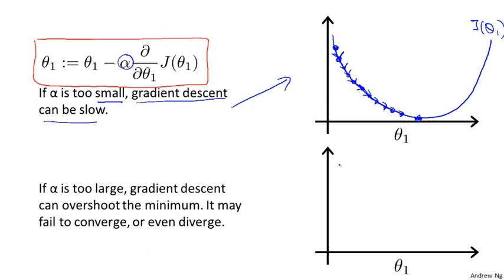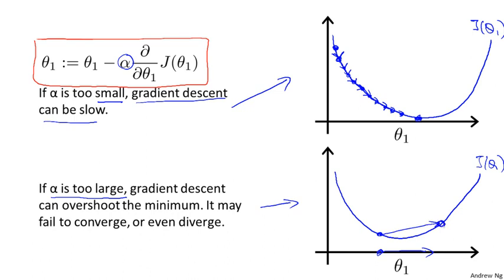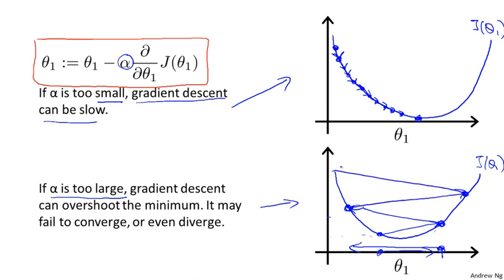How about if alpha is too large? If alpha is too large, then gradient descent can overshoot the minimum and may even fail to converge or even diverge. Say I start off near the minimum — the derivative points to the right, but with a huge alpha I take a huge step and my cost function actually gets worse. Then on the next iteration, if my learning rate is still too big, I overshoot again and again, getting further and further away from the minimum. So if alpha is too large, it can fail to converge or even diverge.